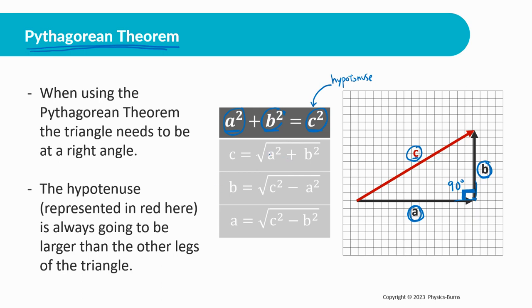If we want to find the hypotenuse, we take the square root of both sides: c equals the square root of a squared plus b squared. If we want to find b, then b equals the square root of c squared minus a squared. Same thing for a: a equals the square root of c squared minus b squared. If this doesn't make sense yet, it'll become clearer with the math examples.